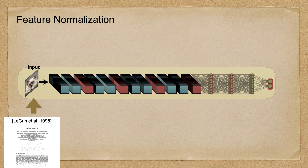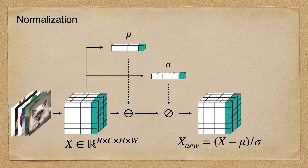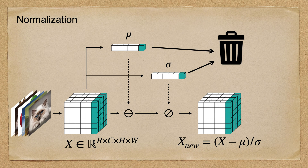Many works have explored that feature normalization, such as batch normalization, could help stabilize the training and boost the performance. Normalization is typically performed after each layer of the neural networks, and it aims to standardize the input to the next layer by subtracting the mean and dividing by the standard deviation.